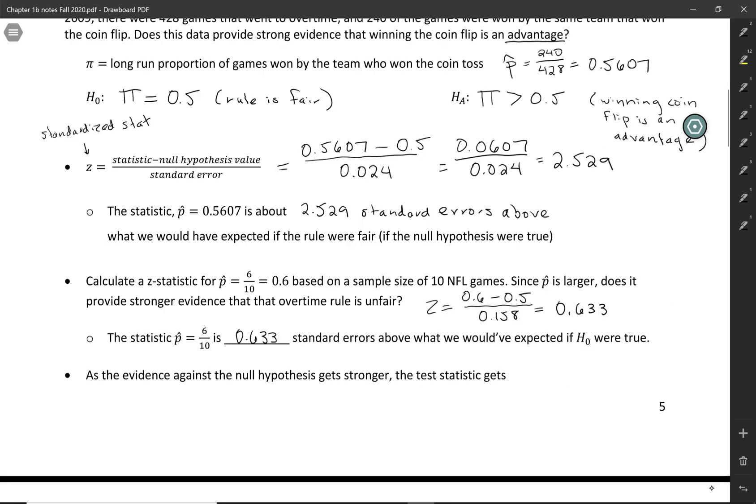In this case, with the smaller z-statistic, we're going to have weaker evidence. We're not nearly as sure that there's a real problem with the rule based on this 6 out of 10 as we were with the real data.